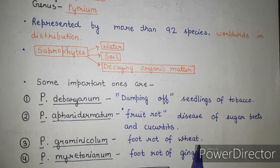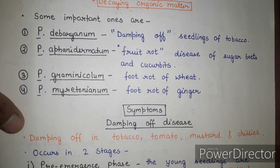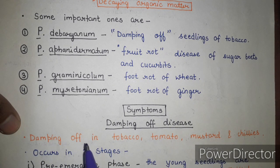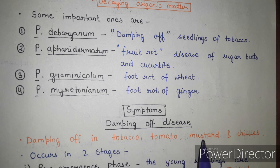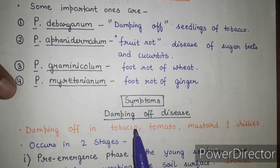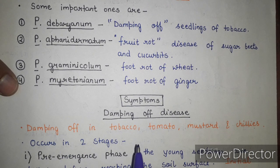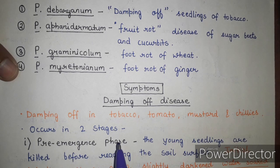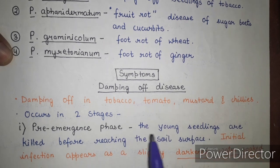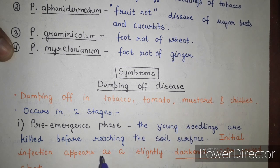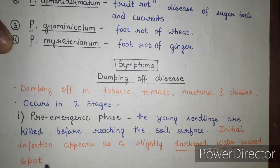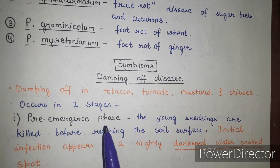Next we will discuss the symptoms of damping-off disease. Damping-off is caused by Pythium, and its hosts include tobacco, tomato, mustard, and chillies. Infection of Pythium can be seen in two stages. The first is the pre-emergence phase, where young seedlings are killed before reaching the soil surface. Initial infection appears as a slightly darkened, water-soaked spot.